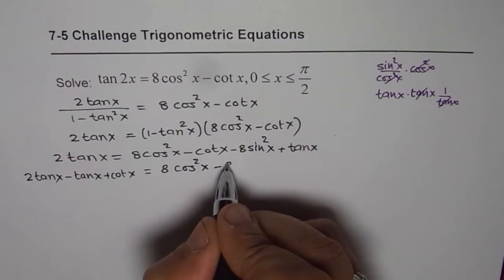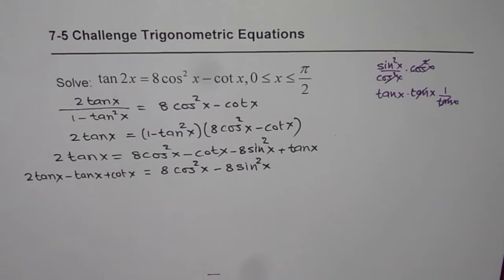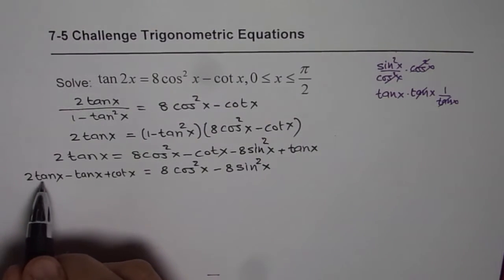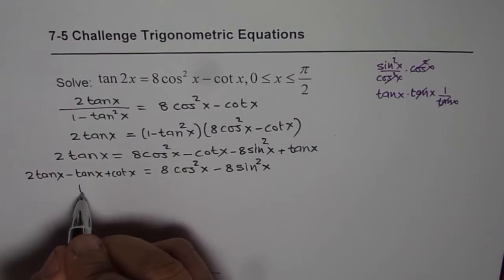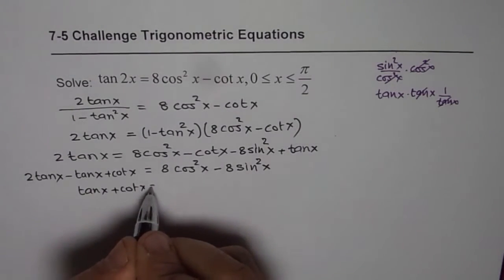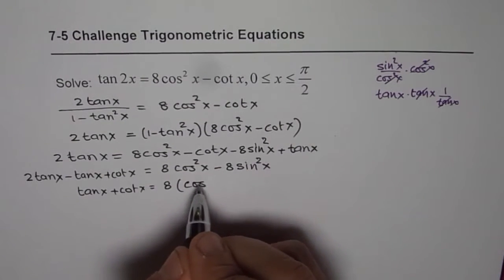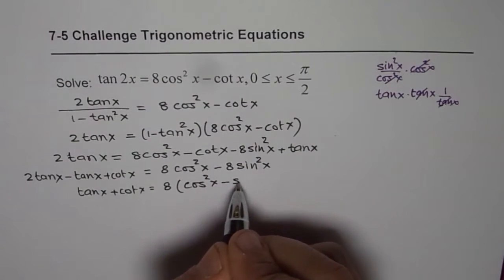This becomes 8 cos square x minus 8 sine square x. Now here 2 tan x minus tan x is tan x, so we get tan x plus cot x equals to we can take 8 common, we are left with cos square x minus sine square x.